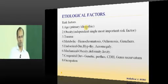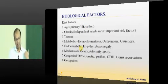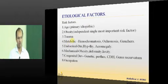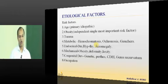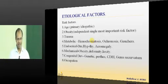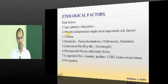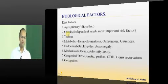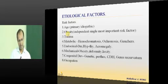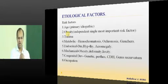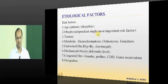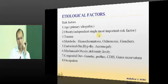Now moving to osteoarthritis proper — its etiology and risk factors. Age is a primary risk factor because it is a degenerative condition. Obesity is an independent risk factor: excess weight must be borne by the joints, increasing stress and strain on the cartilage proportionally, leading to more degeneration.